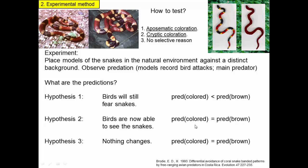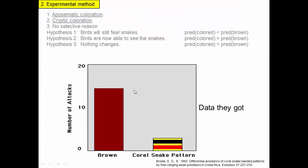If there's no selective reason, you'd again expect the number of attacks to be equal. So now we have predictions arising from our hypotheses and a way to measure them. The data they got showed that the number of attacks on the brown fake snake was much higher than the number of attacks on the fake snake with the coral snake color pattern. This data — more attacks on the brown ones than on the colored ones — is consistent with aposematic coloration and would support that hypothesis, but would not support the hypothesis of cryptic coloration or the hypothesis that the color pattern doesn't matter.